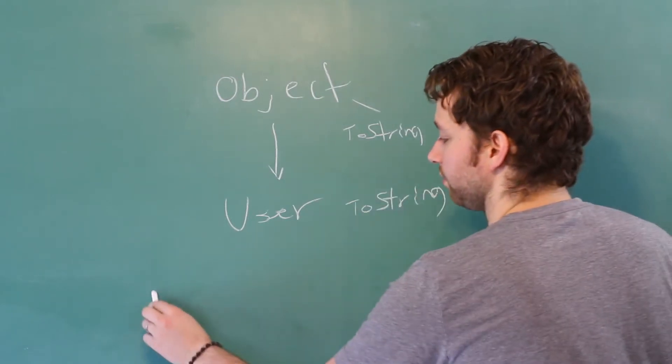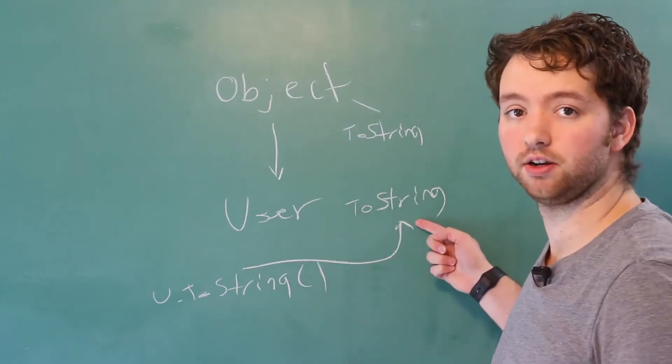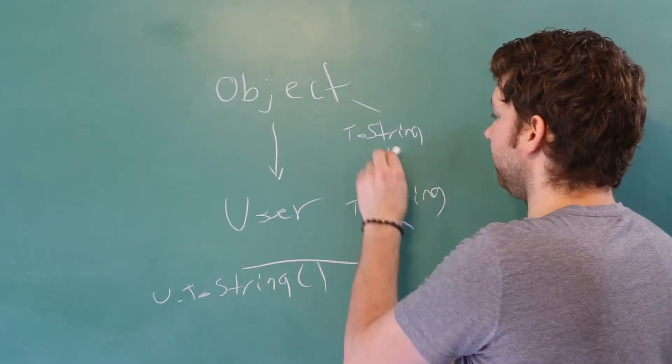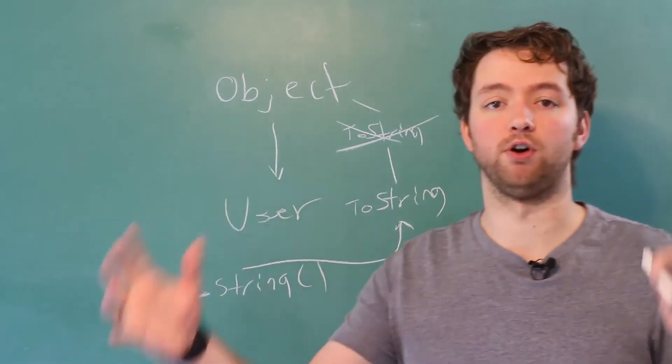Then when we create a user, we'll just name them u and call toString. Well, it's going to call this one. So we override this one, and now we're using this one. So that's the whole concept of overriding methods.